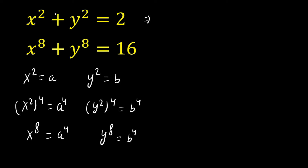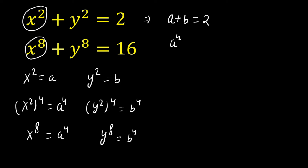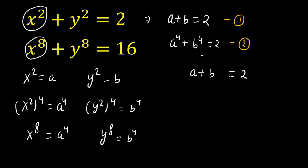Now x² is replaced by a, so we get a + b = 2. And x⁸ is replaced by a⁴, y⁸ is replaced by b⁴, giving a⁴ + b⁴ = 16. Let us consider this equation number one and this equation number two.